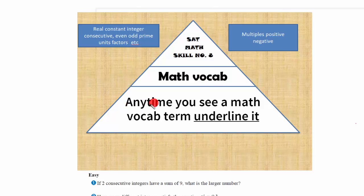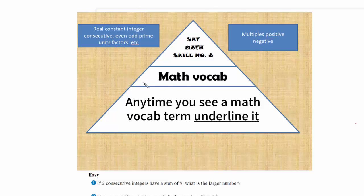The skill is telling you that anytime you see a math vocab term, underline it so that you clearly have your goal set — this is the thing I need to calculate and this is the way I should follow. For example, you'll have terms like real, constant, integer, consecutive, even, odd, prime, units digit, factors, multiples, positive, negatives — these are all math vocab terms we need to understand.